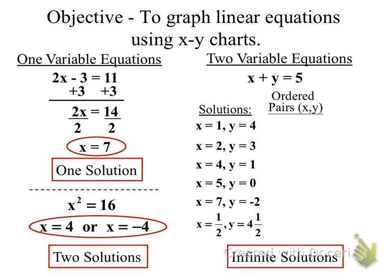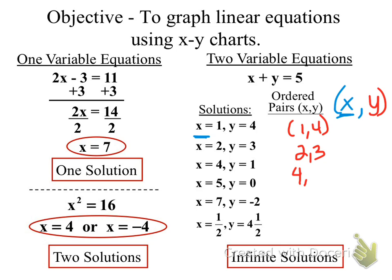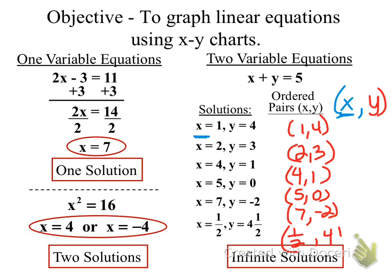These solutions have an X and a Y. When they call it an X, it's the first part of the ordered pair. That's your X. When they give you a Y, it's always the second number in the ordered pair. So this becomes: one comma four, two comma three, four comma one, five comma zero, seven comma negative two, and one-half comma four and a half.